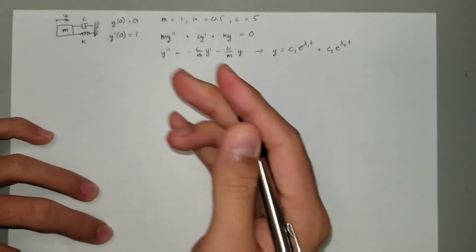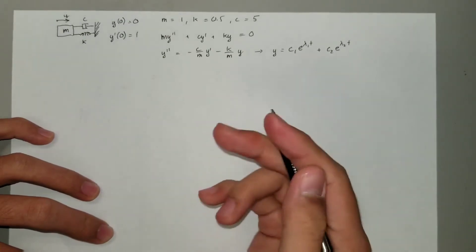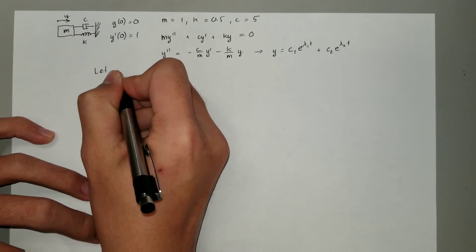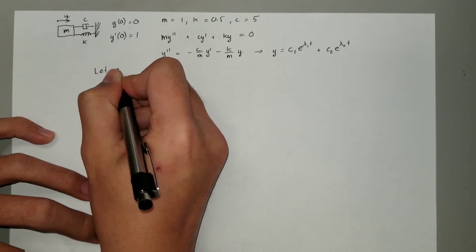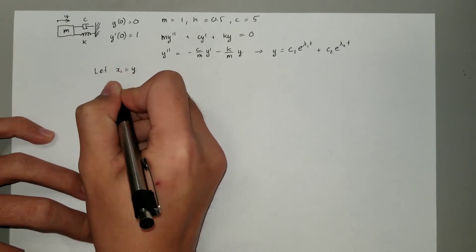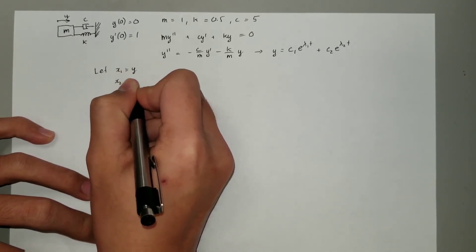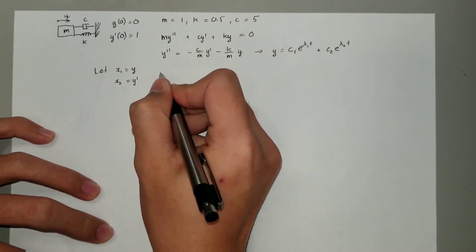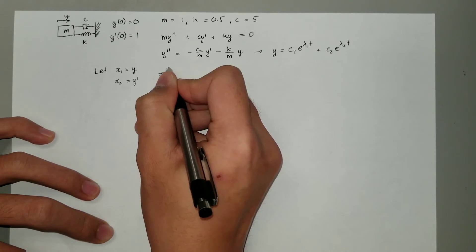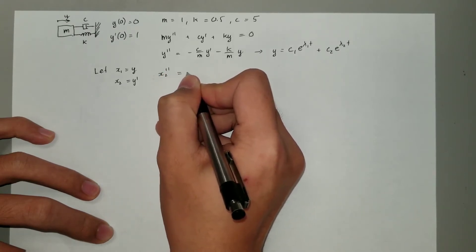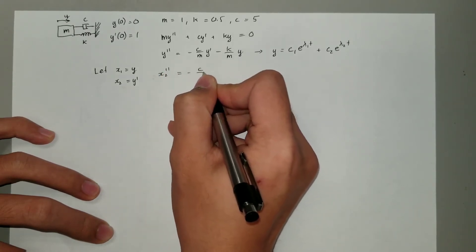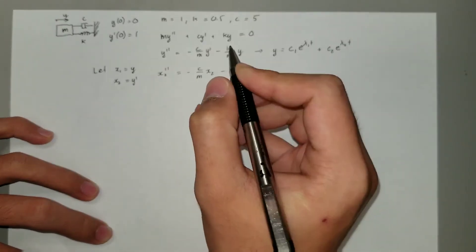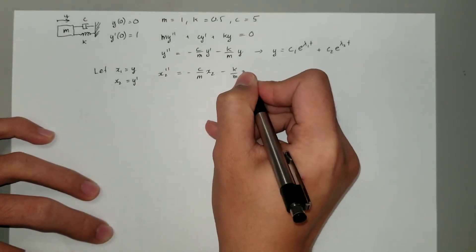Here's how the eigenvalue method works for this type of equation. First, let x1 equal y and x2 equal y'. This equation can then be written as x2' equals negative c over m times x2 minus k over m times x1.